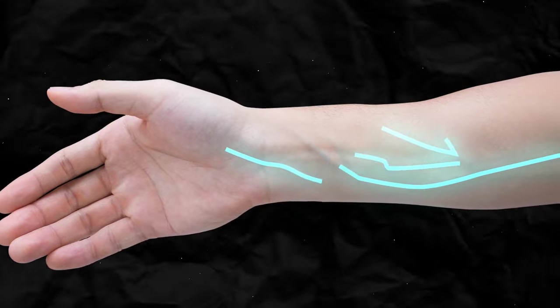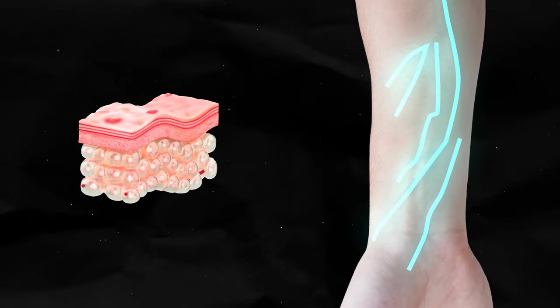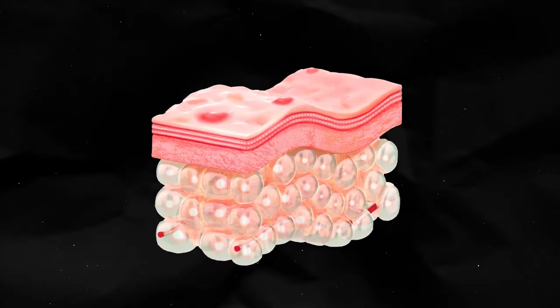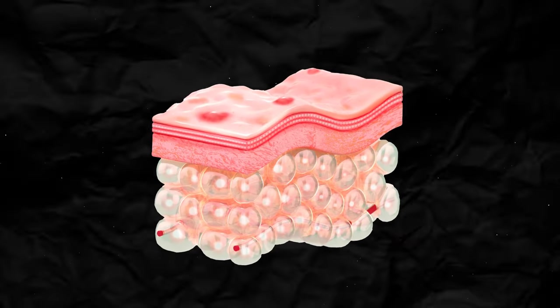Veins look blue because light has to go through layers of skin and fat to reach them. Your skin scatters a lot of the red portion of white light before it reflects the blood. This leaves only the blue light to bounce back to your eyes.